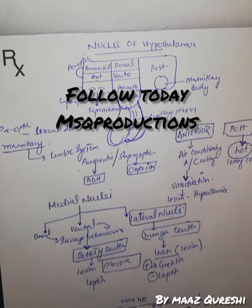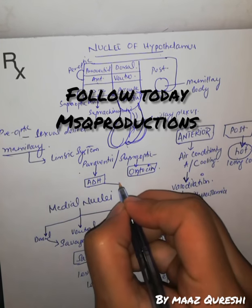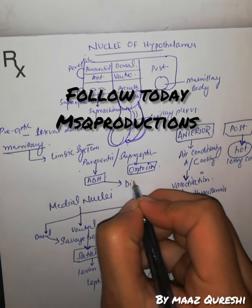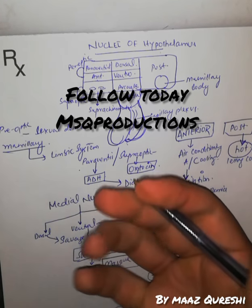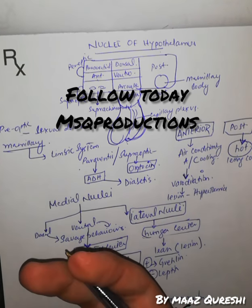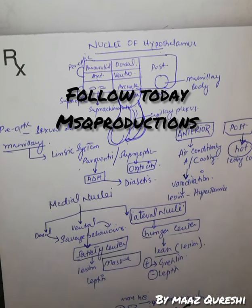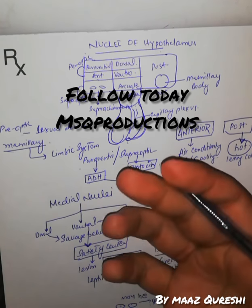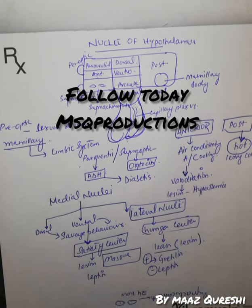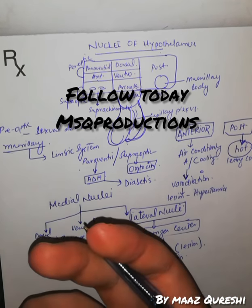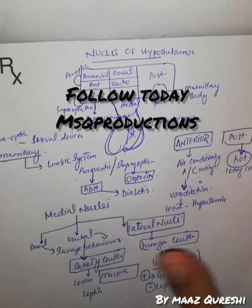The paraventricular and supra-optic nuclei — if there is a lesion, you will get diabetes insipidus. You will need more water, resulting in polydipsia and polyuria. You will lose more urine and will not be able to reabsorb water through the kidneys.